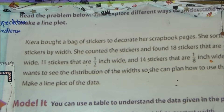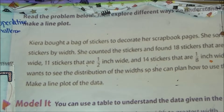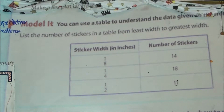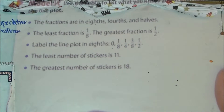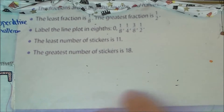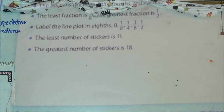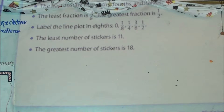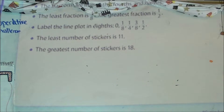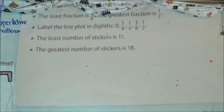You'll need a separate sheet of paper to make the line plot, or you could use the tiny margin at the very bottom of page 234. You need to make sure your data points are small and that you're hugging tight to the bottom of the page. Before making the plot, look at the table under 'model it' — the widths are 1/8, 1/4, and 1/2. We can't plot those without common denominators. My denominators are 4, 8, and 2. The common denominator should be 8ths.